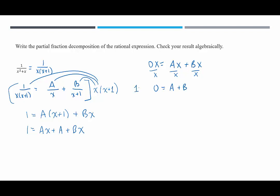Our second equation contains just the constant terms — the terms without x. On the left-hand side we have 1, and on the right-hand side we only have A. So A equals 1. Then substituting 1 for A in the first equation, we get zero equals 1 plus b. Subtracting 1 from both sides, b equals negative 1.